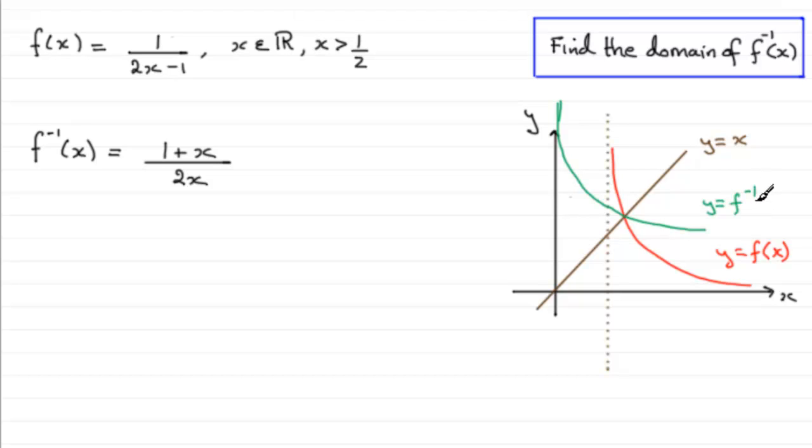So the range, as I said, of the red graph, which is any value of y greater than zero, now gets mirrored in y equals x and it now becomes the domain for the green graph, the inverse function. So can you see that the domain, what we're being asked for, is essentially this: the domain is any value of x which is a real number, but that real number has to be greater than zero. So x has to be greater than zero. So I hope that's given you some idea how I approach it from a graphical point of view.